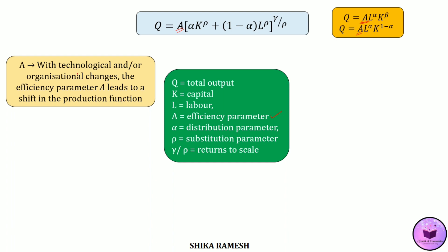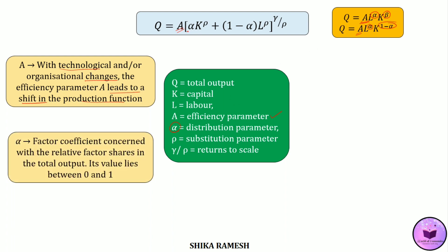Therefore, whenever there is a change in technology, that change would lead to a shift in the production function. The next similarity between these two production functions is the distribution parameter represented by alpha. Though in the Cobb-Douglas Production Function the distribution parameter is given in an exponential form, in the CES Production Function it is given as a coefficient of labor and capital. The distribution parameter tells us the factor shares of labor and capital in the total output.